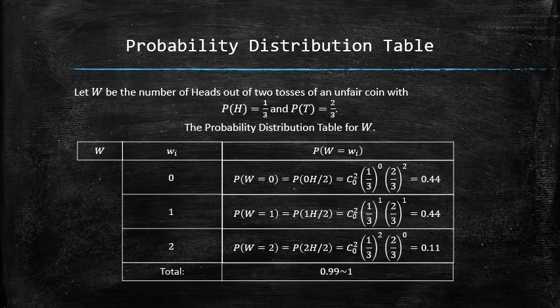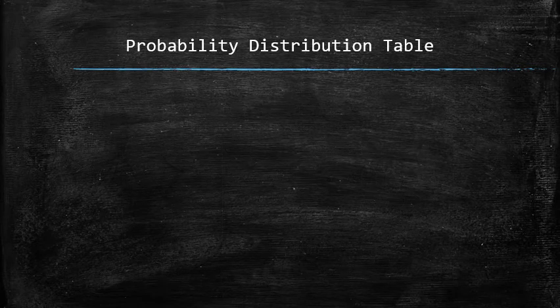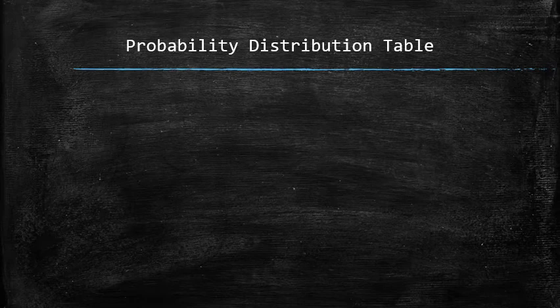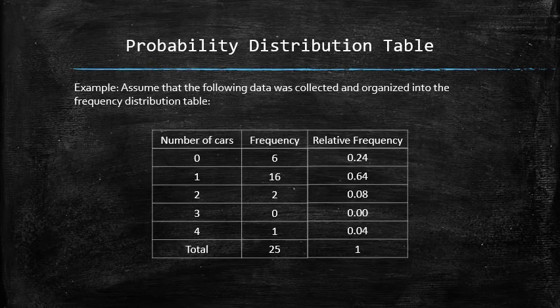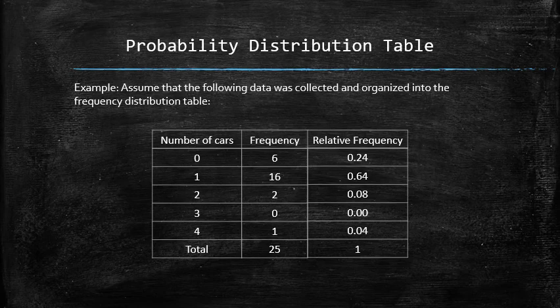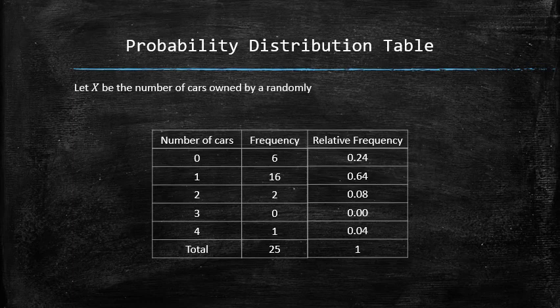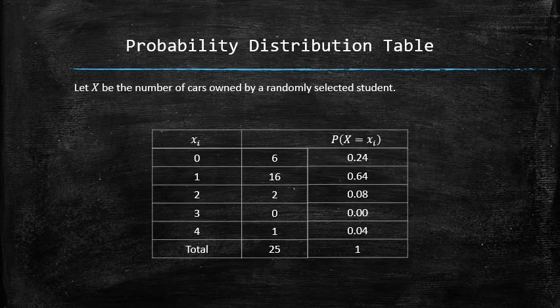Sometimes the probability distribution table can be created using theoretical probabilities, as in the previous three examples. However, sometimes the frequency distribution table can be used as an approximation for the probabilities. Assuming the sample is representative of the population, we can use it to approximate the distribution of the population. If we let x be the number of cars owned by a randomly selected student, the relative frequency distribution table can be easily converted into the probability distribution table for x.